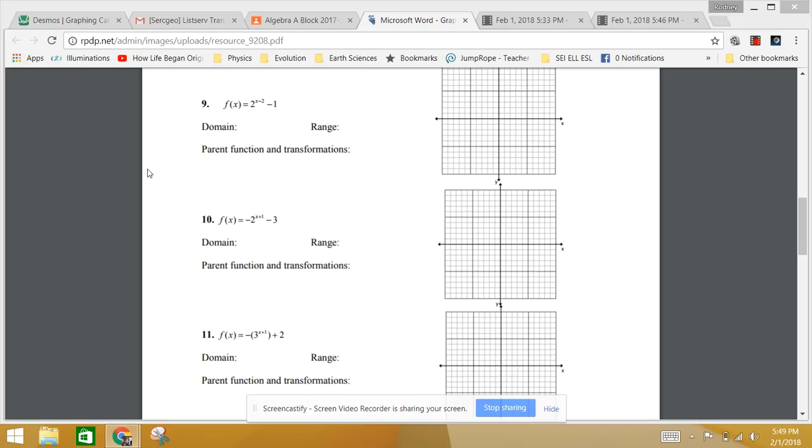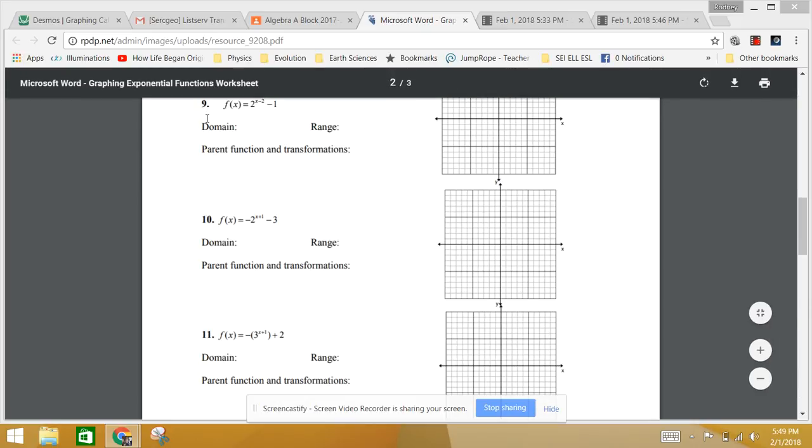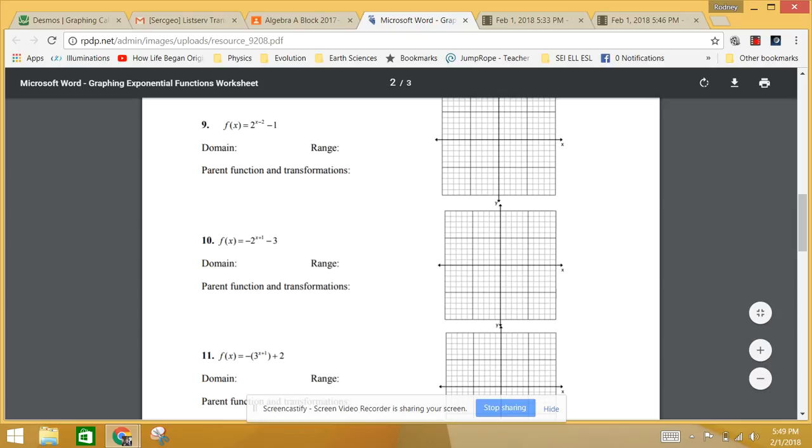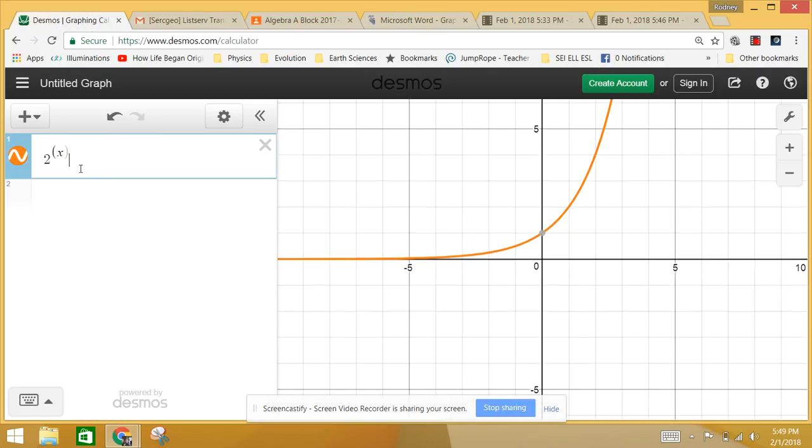So let's start off by identifying the base function for each of these. For number 9, or the parent function, it's often called base or parent function. So number 9, the parent function is 2 to the x. And I've plotted 2 to the x. I don't think we need to keep plotting 2 to the x. We've done that a number of times.